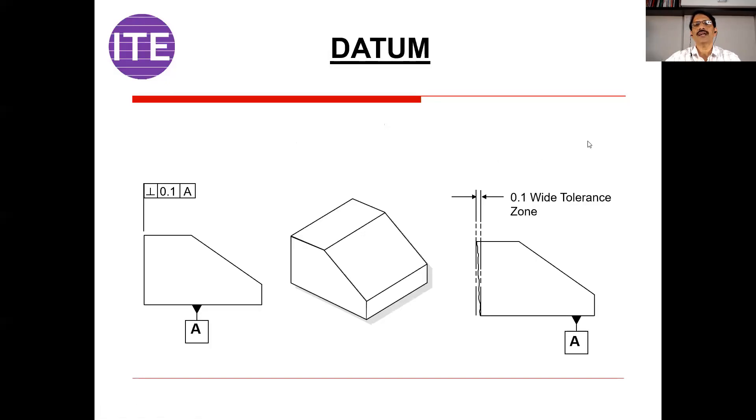But before that, let us understand what is datum. Datum is assuming that ideal surface or axis or point area is perfect. But that is not true. You are just assuming that it is perfect. On the screen you can see one drawing and the bottom face of the component, the datum is provided, that is datum A.